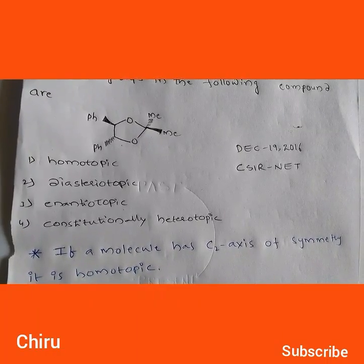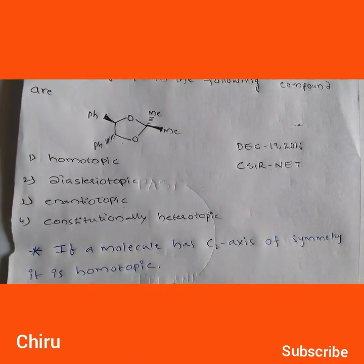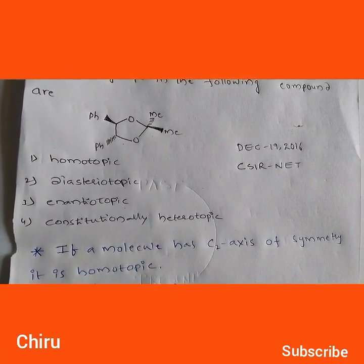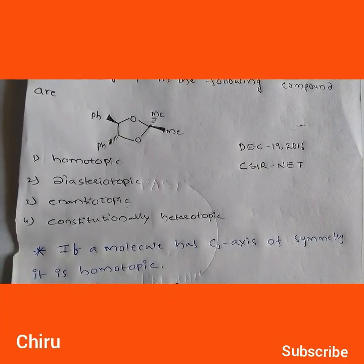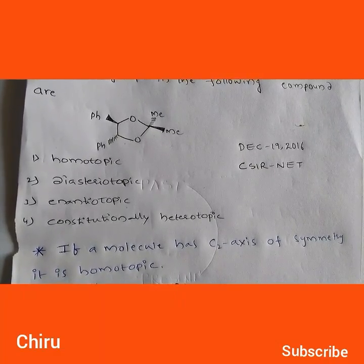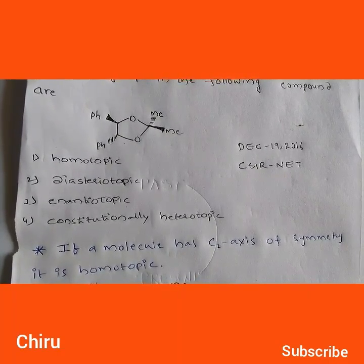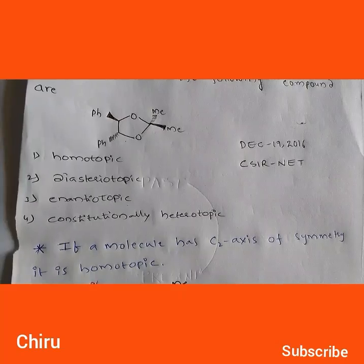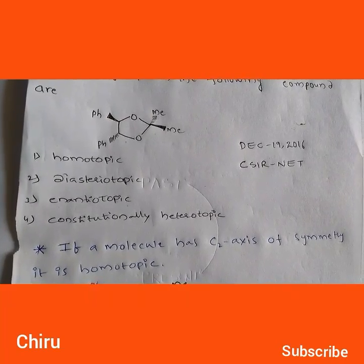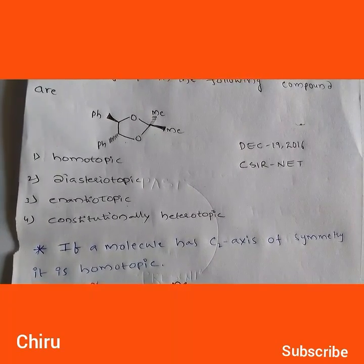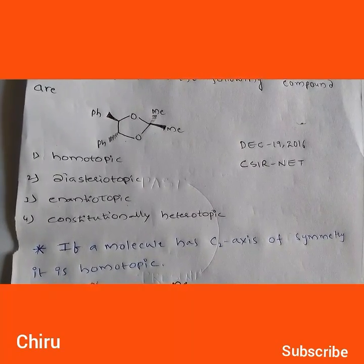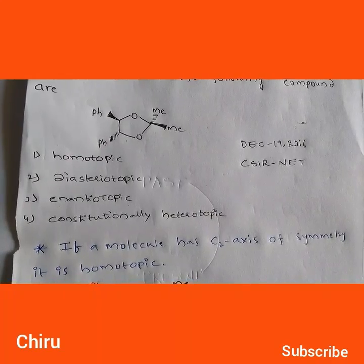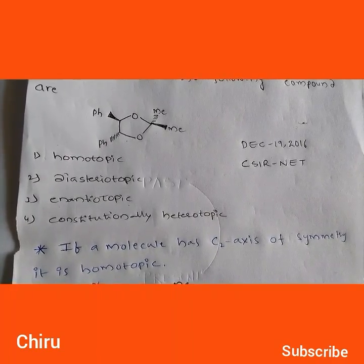What is enantiotopic? If the molecule has any symmetry except a proper axis of symmetry, that is enantiotopic. Constitutional means the different constitutions of ligands on the molecule.